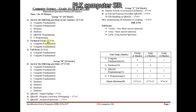Question 3 is full forms: 2 questions × 1 mark = 2 marks, and both full form questions come from Computer Fundamentals. This completes Group A with a total of 10 marks.